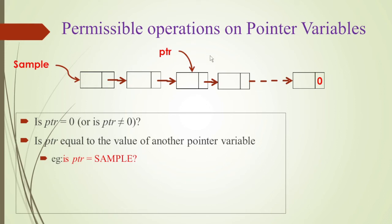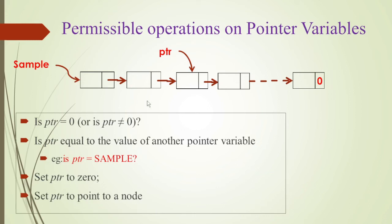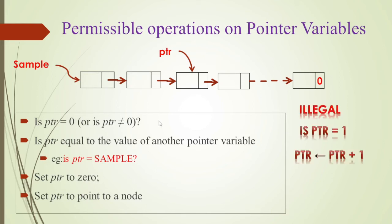We can also check whether Ptr and some other variable, like sample, are the same — that means we can compare pointer values. You can also set Ptr to 0 or set Ptr to point to a node. These are all the permissible operations on a pointer variable.